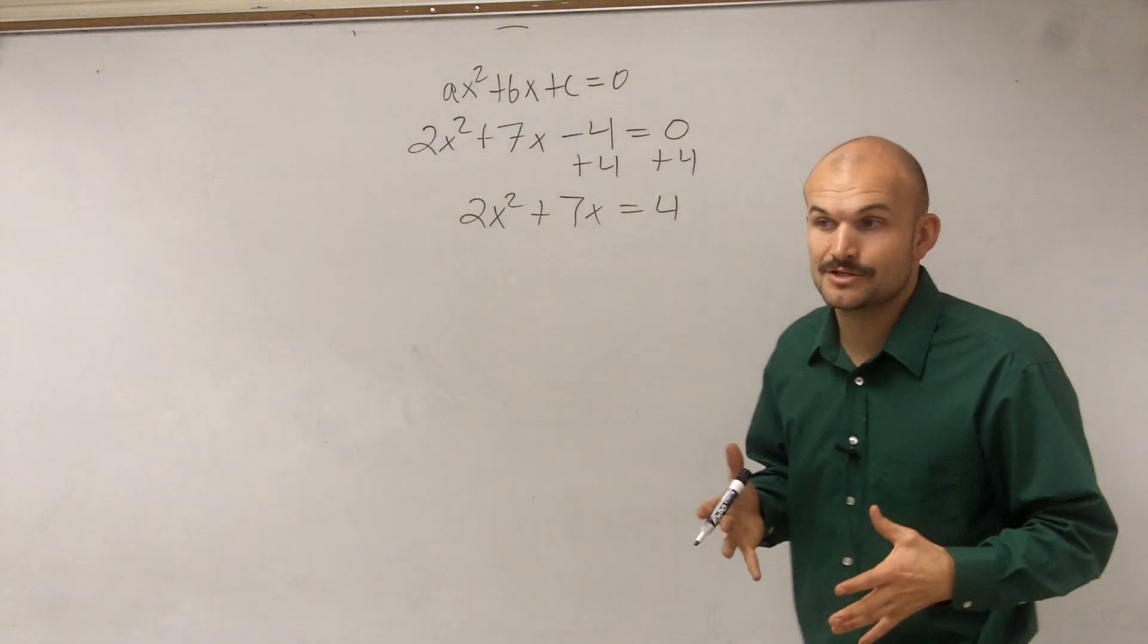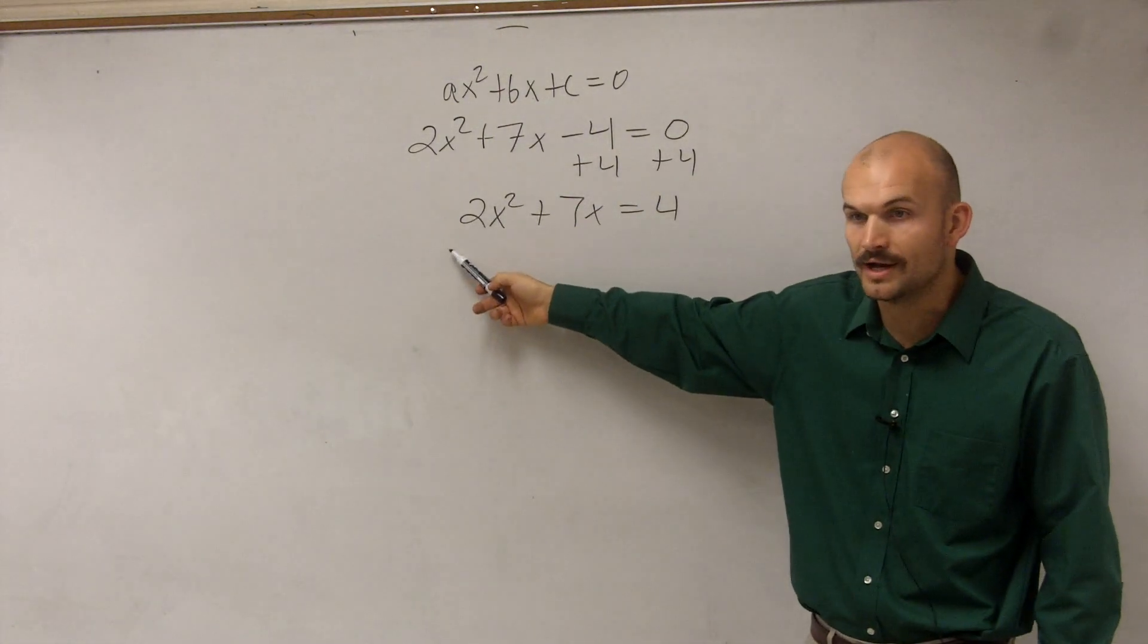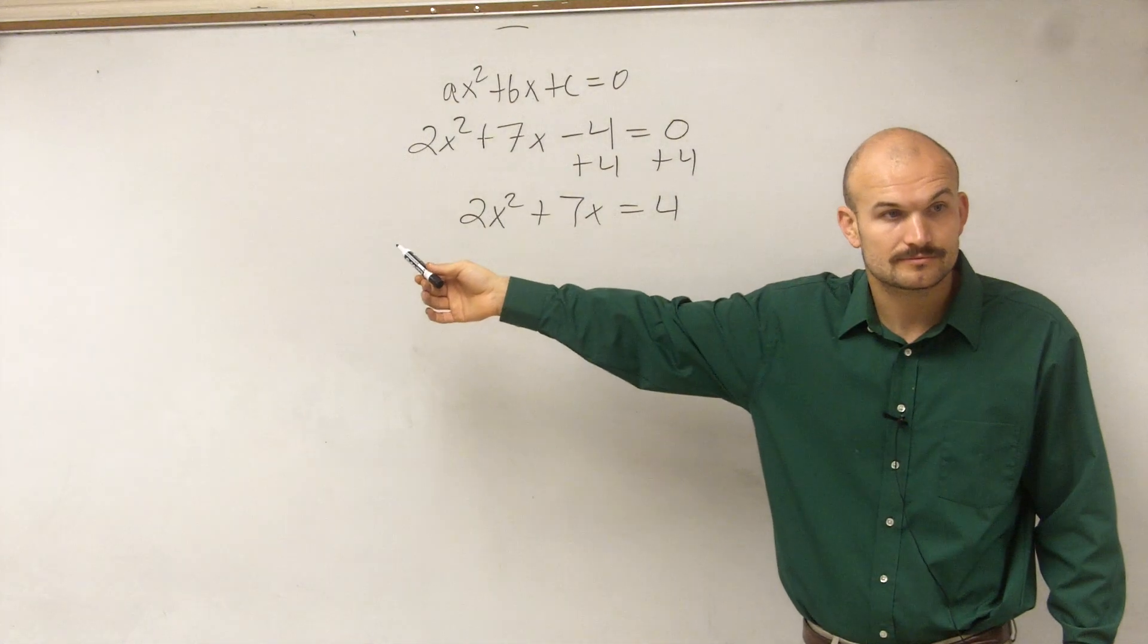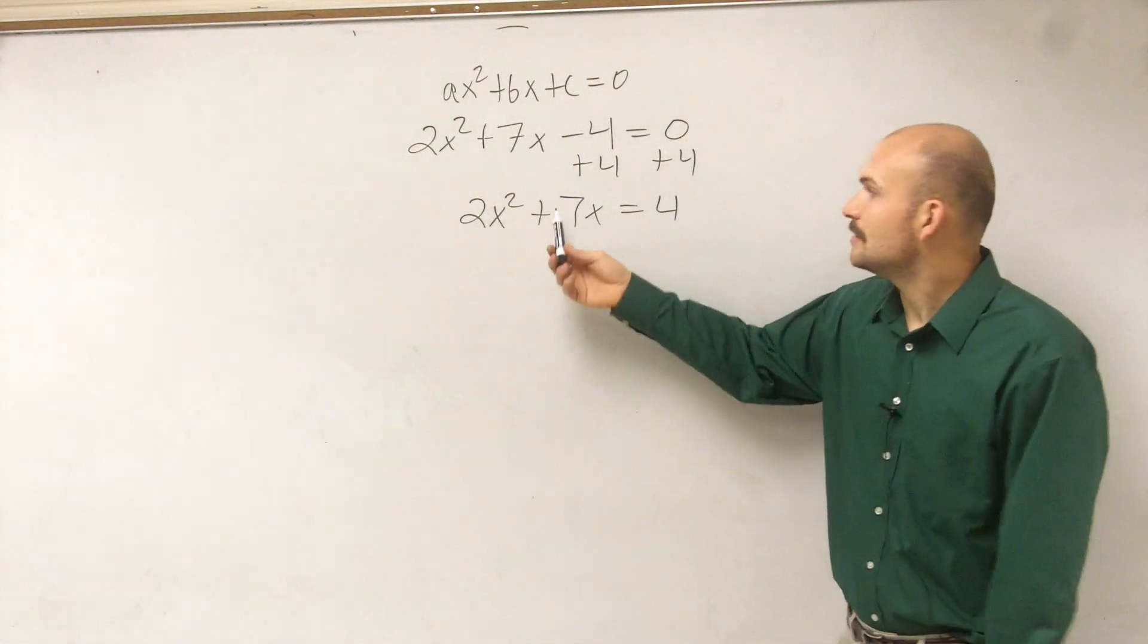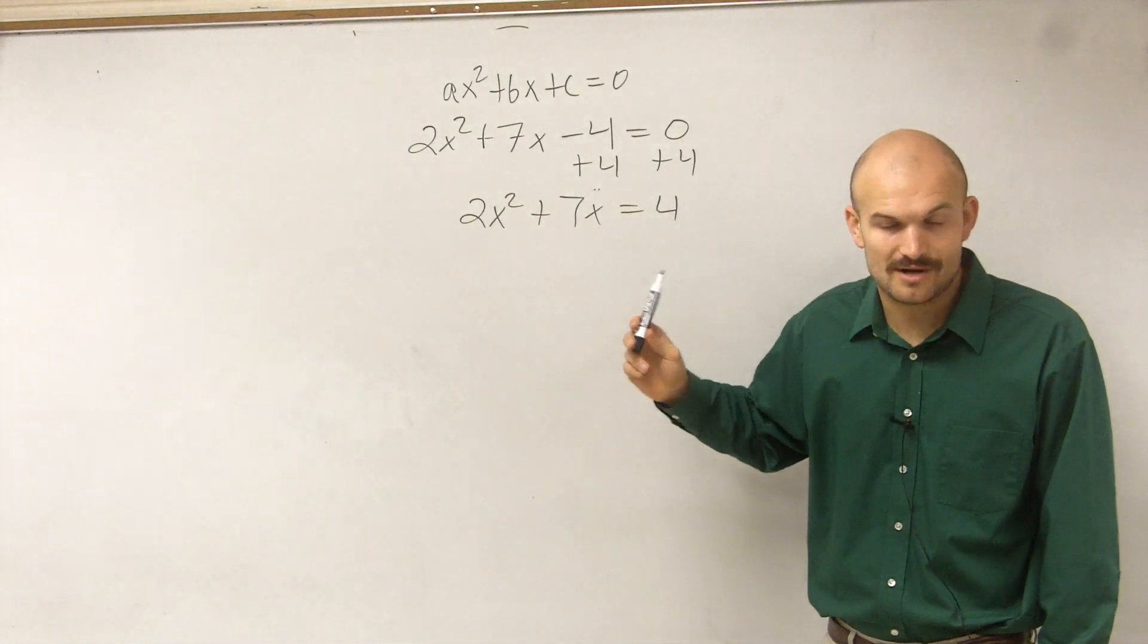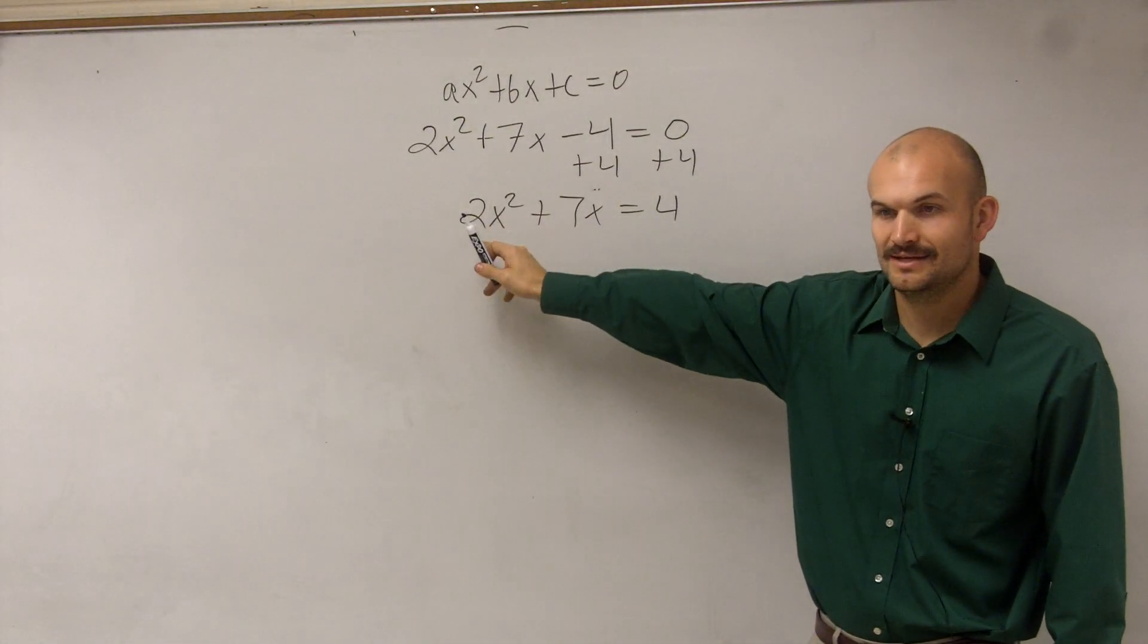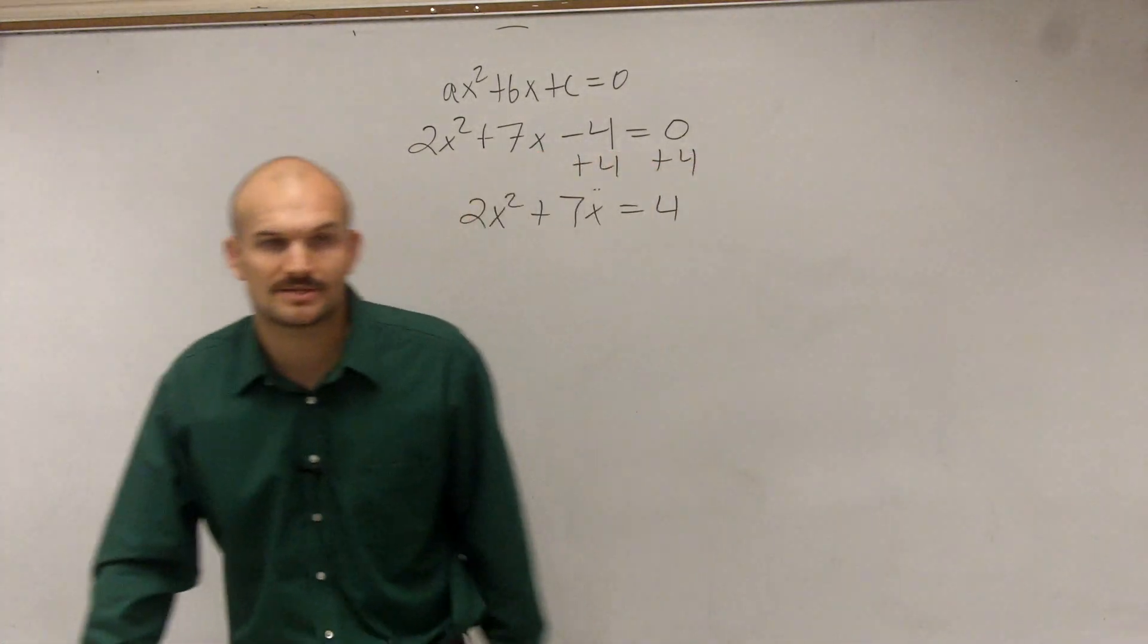Now, remember, I said I want to create a perfect square trinomial. The best thing I always like to do first is see if you can factor out, because when you have A greater than 1, a lot of times you can factor out a number, right? But in this case, we need to factor out a number. Sorry, my mistake. You cannot complete the square when A is greater than 1. So what we're going to have to do is we're going to have to factor out that 2.